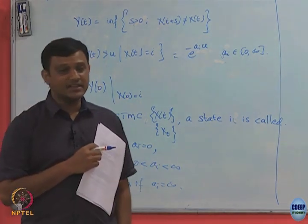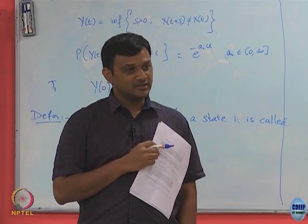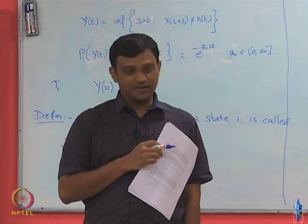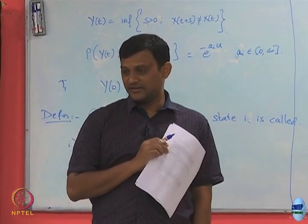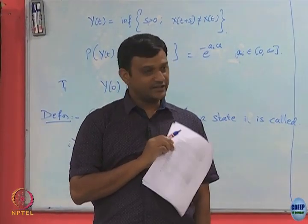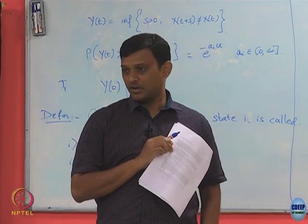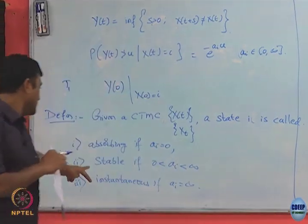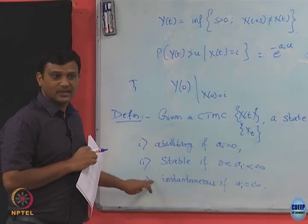Anything in between — when ai is strictly finite and strictly positive — we call the stable case.